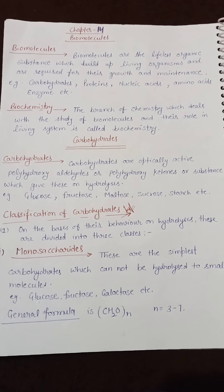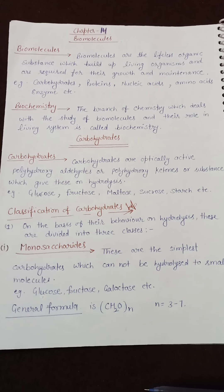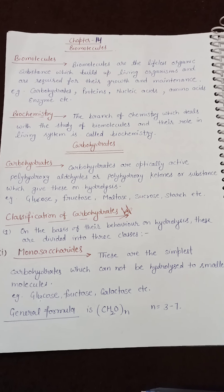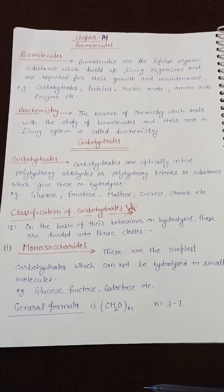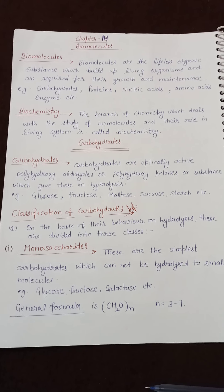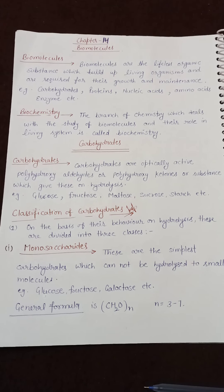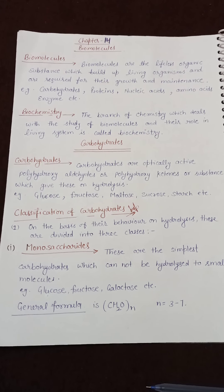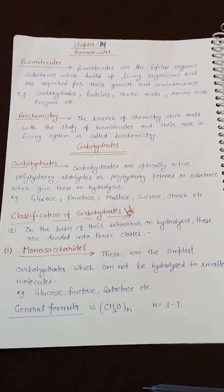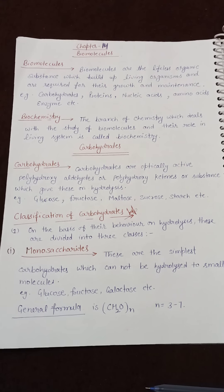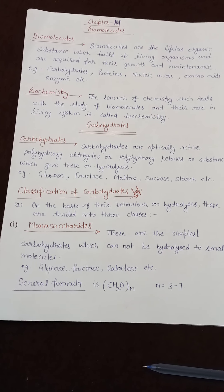Carbohydrates are optically active — they rotate plane-polarized light. If a substance rotates plane-polarized light clockwise, we use the positive sign or small 'd'. If it rotates anti-clockwise, we use the negative sign or small 'l'. So a positive sign means clockwise rotation and a negative sign means anti-clockwise rotation of plane-polarized light.